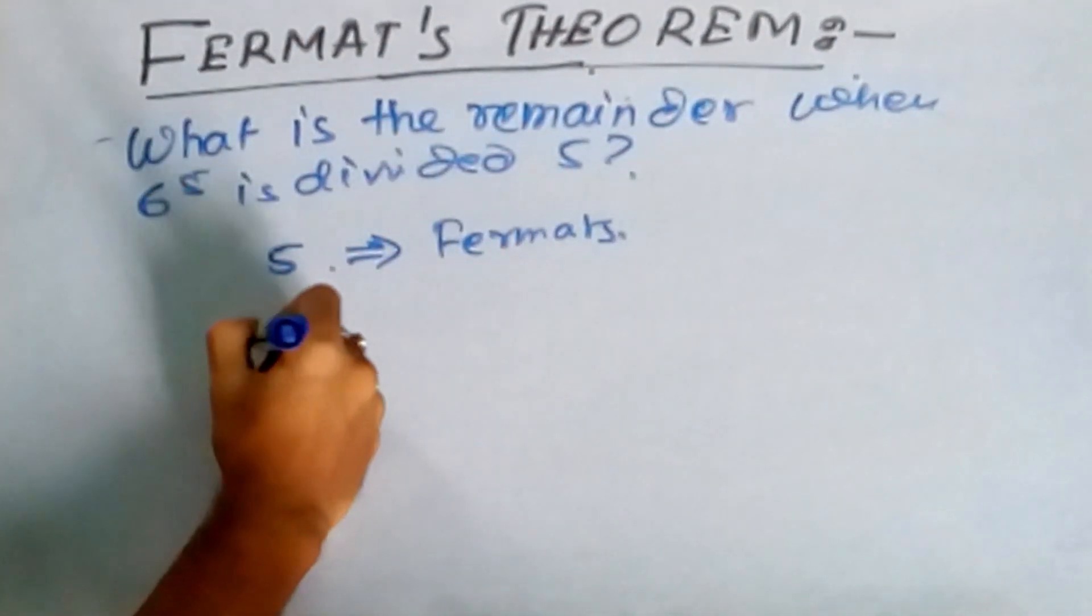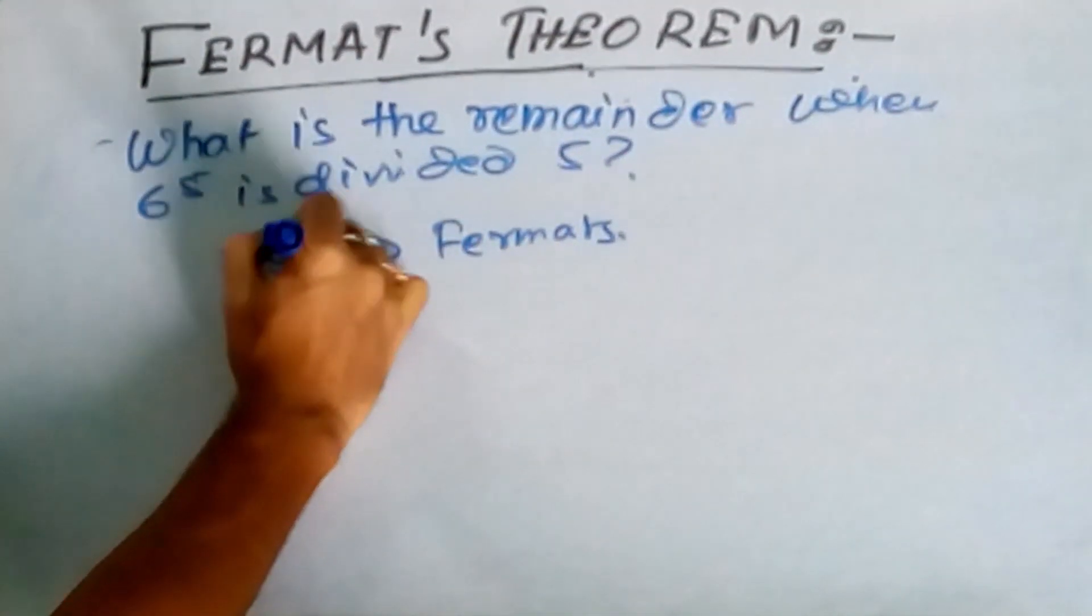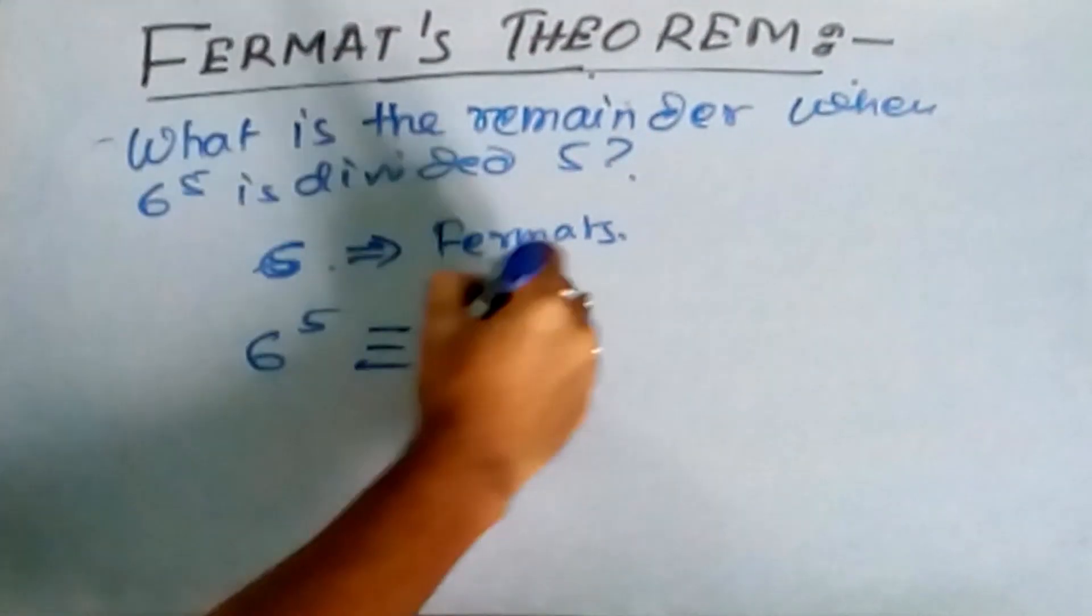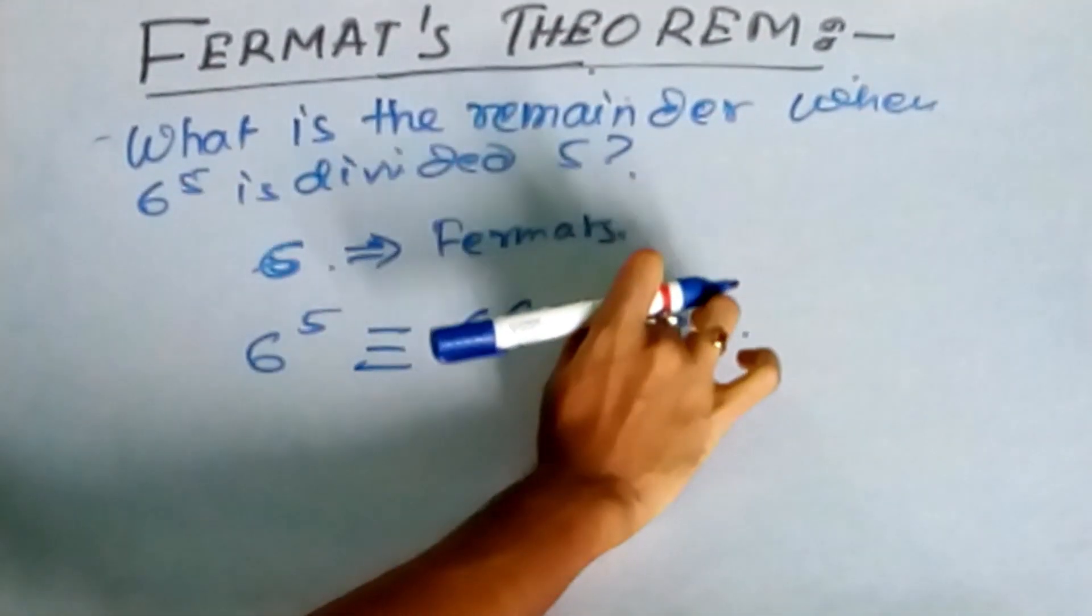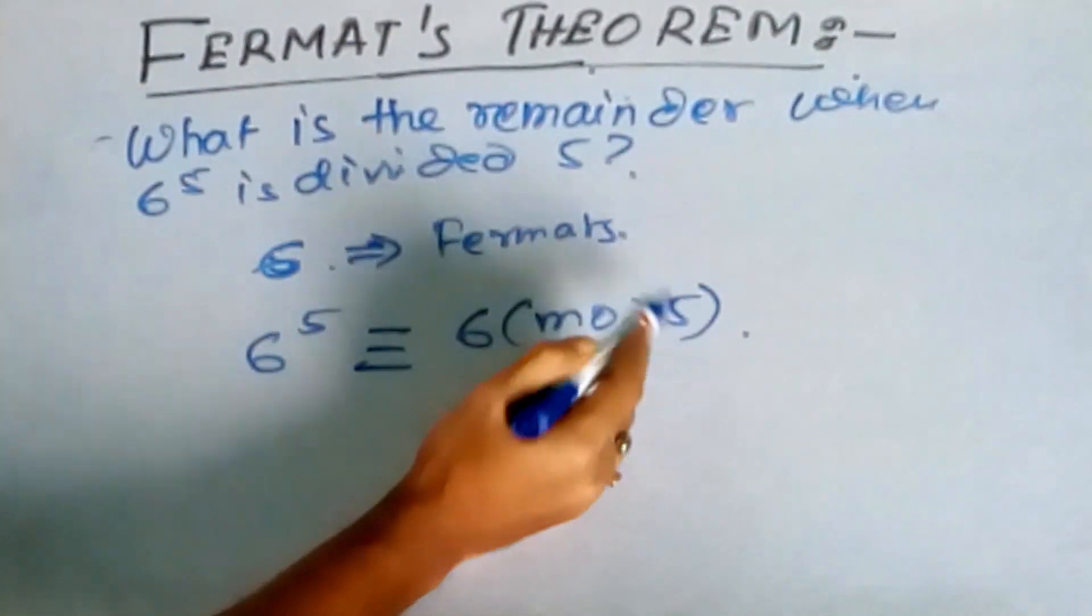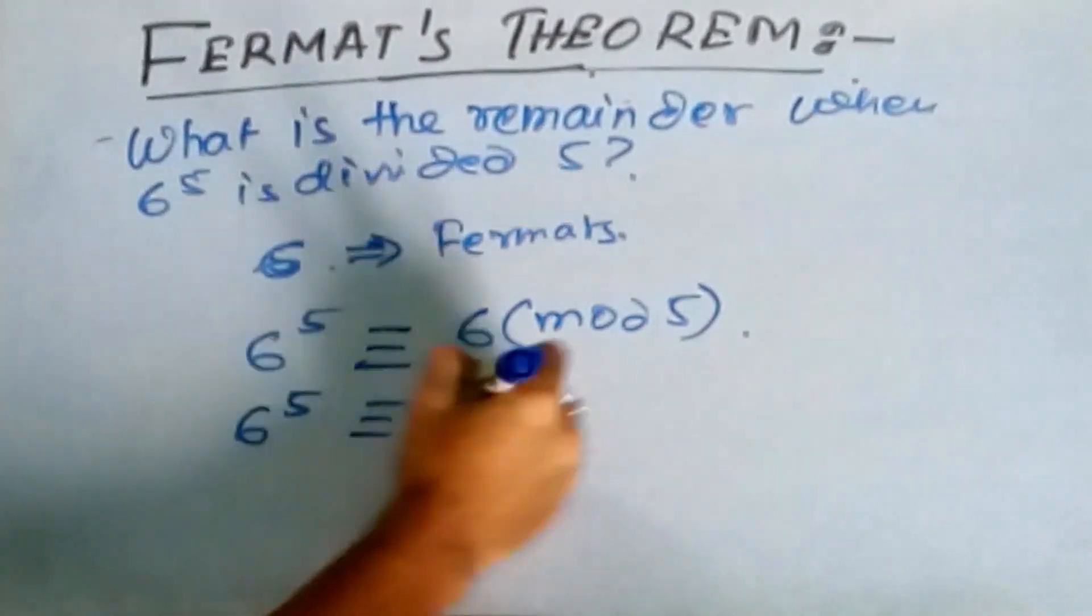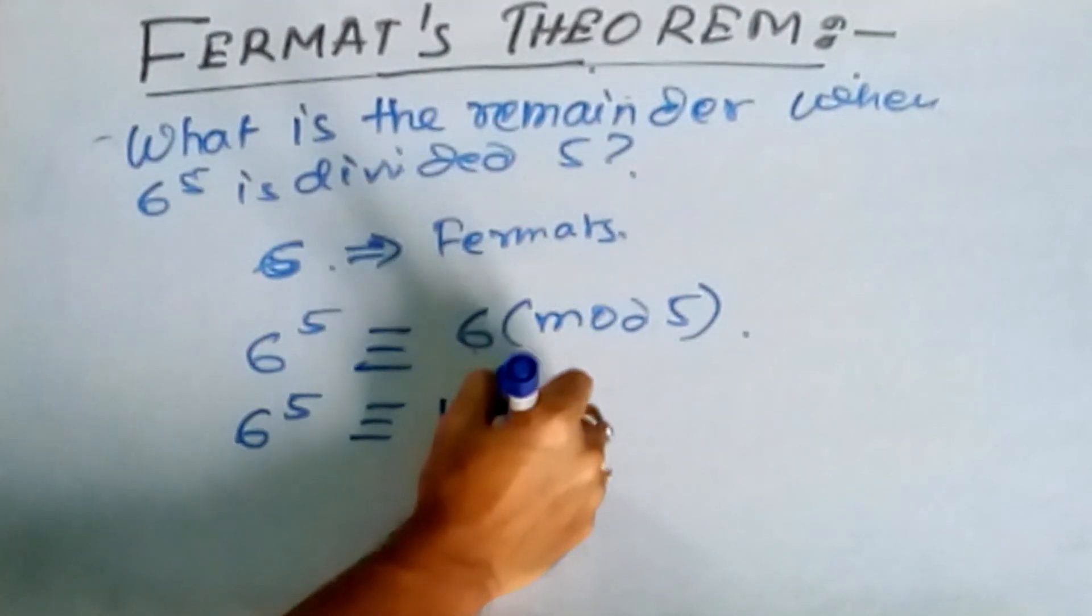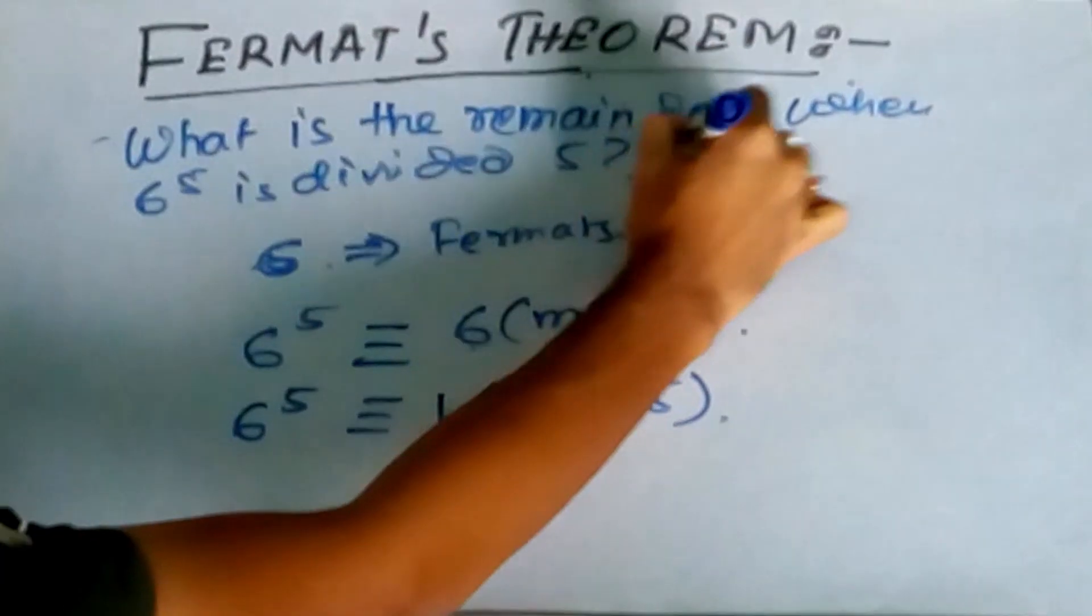Because 6 to the power 5 - the answer is 6. So 6 to the power 5 is congruent to 6 mod 5, you can say it using Fermat's theorem. Now since the remainder is greater than 5, so we write it 6 to the power 5, we again divide 6 with 5 and find the remainder which will be nothing but 1 mod 5. So the answer is 1.